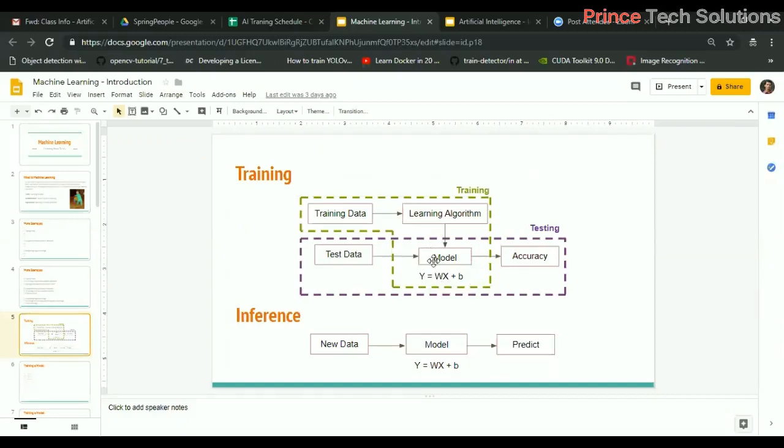Once the model is accurate - not 100% accurate, but we gain good accuracy - we will inference that model in live production. Here we pass new data to the model and the model will predict or classify. These are the basic steps: get the data, divide it into training and test, pass training data to the learning algorithm which learns through iterations and gives you a model. In AI, the term model means an equation which learns the parameter values. We test it over the test data to get accuracy. Once the model is accurate, we inference it.